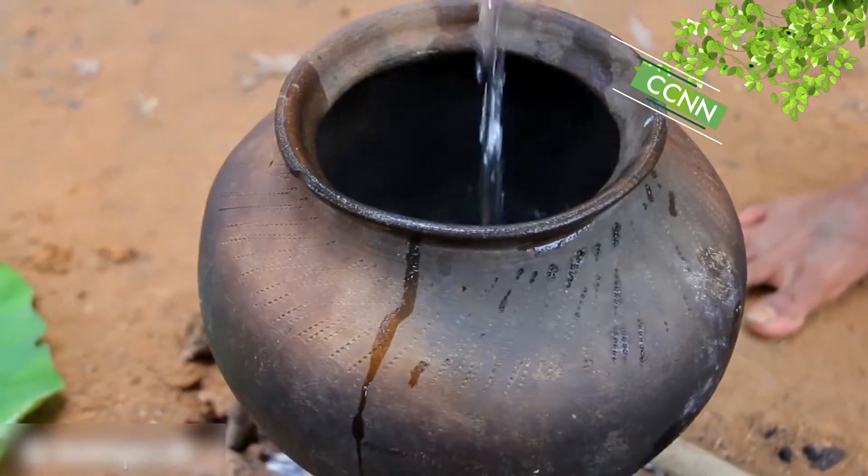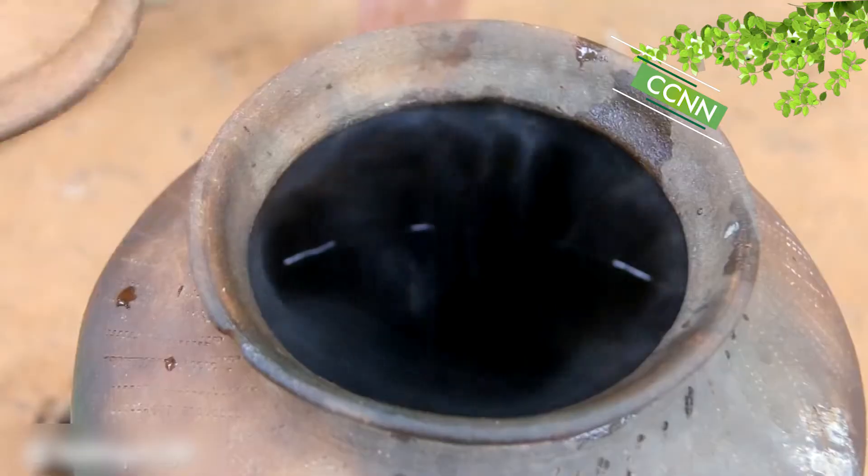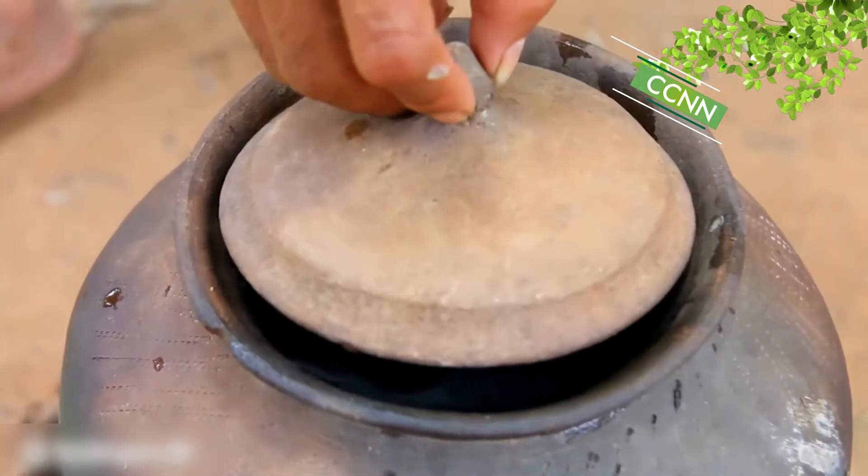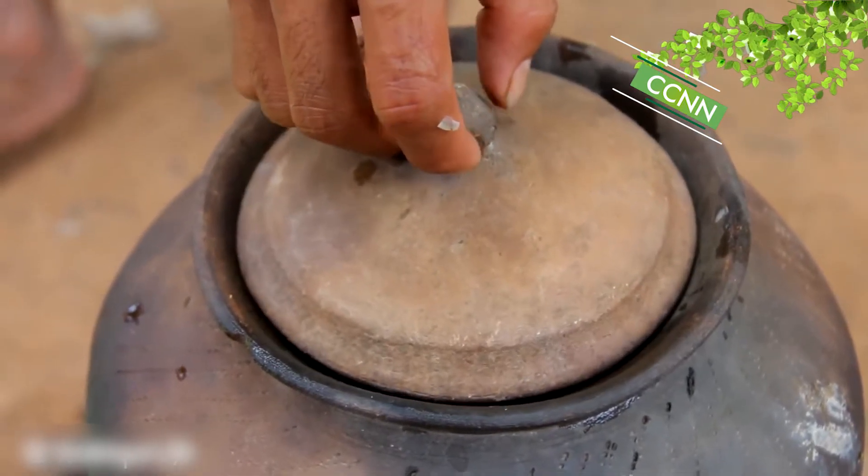A closed system can only exchange energy with its surroundings, not material. If we put a lid very well adjusted on the pot of the previous example, it would be a closed system.